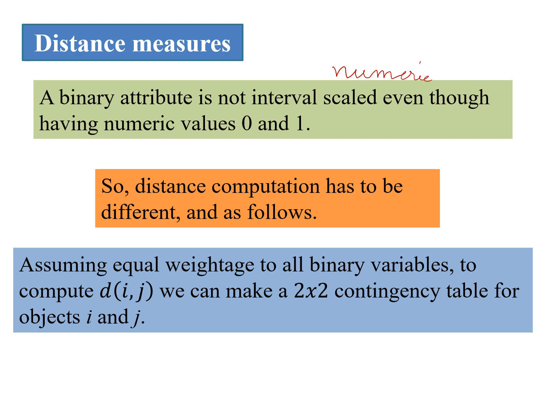Now we assume equal weightage to all binary variables. We are not talking about any weighted variables here. So if all the binary variables in our data matrix are of equal weightage, we make a two cross two contingency table for any two objects i and j.